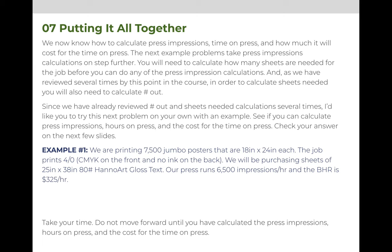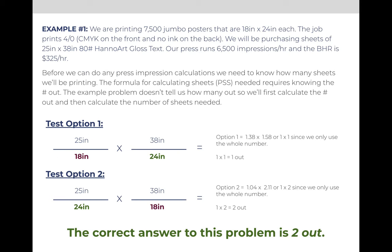For this example, we're printing 7,500 jumbo postcards that are 18 inches by 24 inches. The job will print 4 over 0 — CMYK, or cyan magenta yellow and black on the front and no ink on the back. We will be purchasing sheets of paper that are 25 by 38 inches and the paper we're purchasing is 80 pound Hanawart gloss text. Our press can run 6,500 impressions per hour and we charge $325 per hour. To calculate the cost for the time on press, we must first know how many sheets of paper we are printing, which means we must calculate number out.